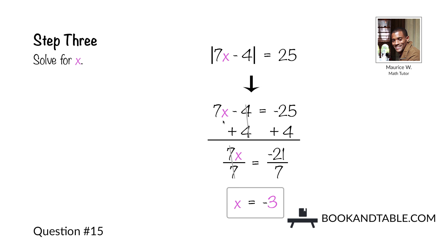Remove the coefficient 7 from x by dividing both sides by 7, leaving you with x is equal to negative 3. So x is equal to negative 3 is one answer. We find our second possible answer by setting the expression 7x minus 4 equal to the positive value, and solving for x again.